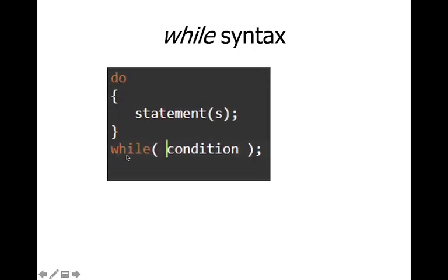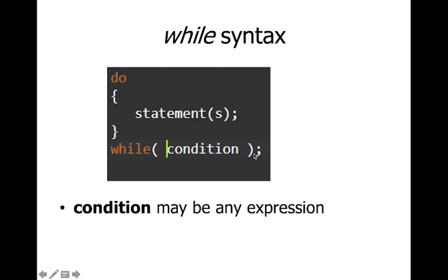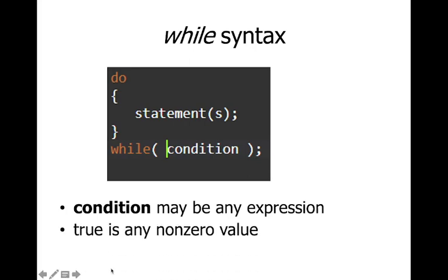Looking at the syntax: the 'while' keyword appears at the bottom. You write 'do', then the set of statements forming the body, and then 'while(condition);' at the end. Note the semicolon after the closing parenthesis — unlike the regular while loop which has no semicolon. The condition can be any expression; a non-zero value is treated as true.